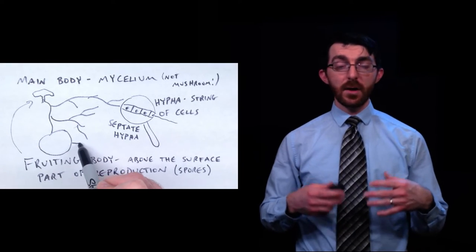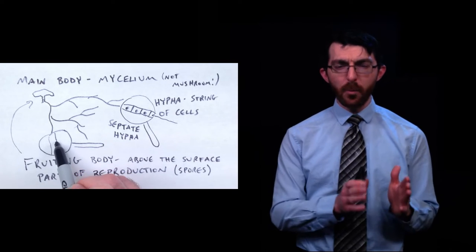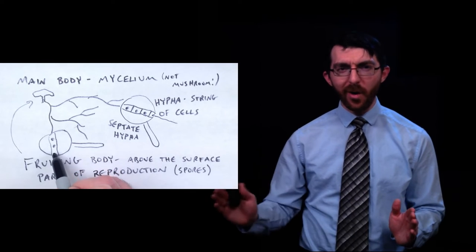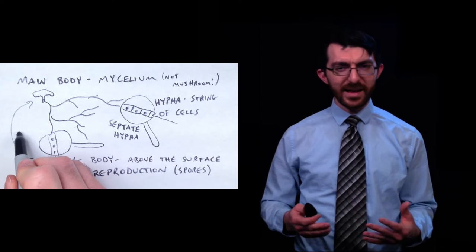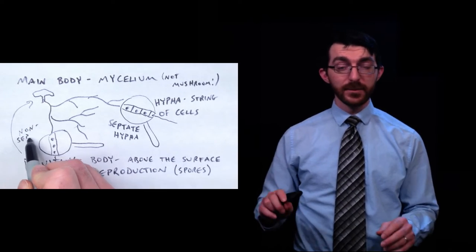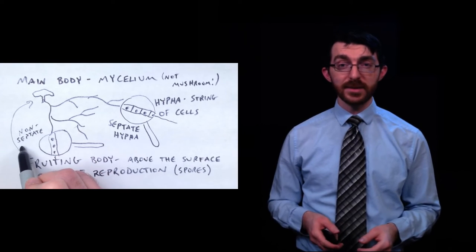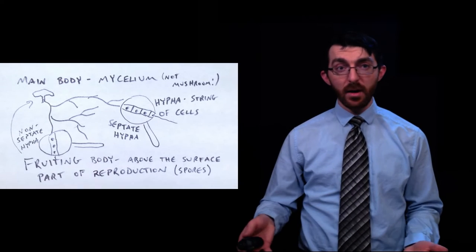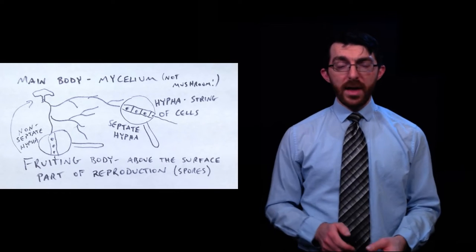The alternative is called a non-septate hypha. In that case, instead of a whole bunch of rooms all in a row, it's just one big long hallway. Kind of like it was one big long cell. The nuclei for all the cells in a non-septate hypha - the nuclei are just spread out and they all share the same cytoplasm.